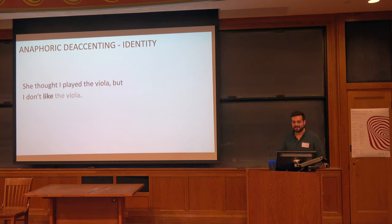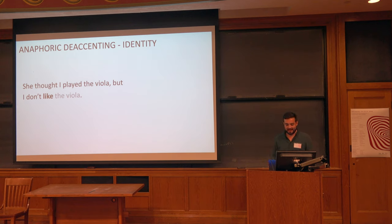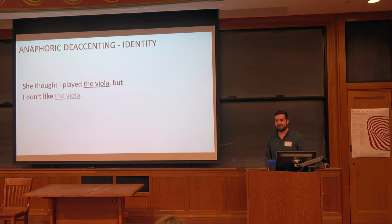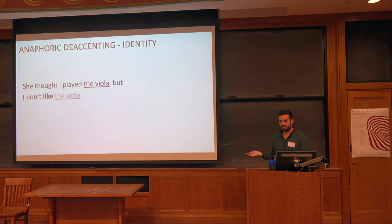If I had an antecedent like 'she thought I played the viola,' then I might realize this as 'but I don't like the viola.' So I've shifted the nuclear pitch accent to 'like,' and I've de-accented 'viola.' It's pretty intuitive what's going on here: there is an identity relation linking the antecedent instance of 'viola' and the target instance of 'viola' that's de-accented.